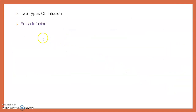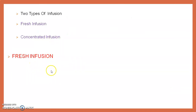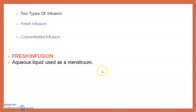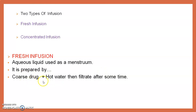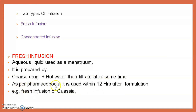There are two types of infusion: fresh infusion and concentrated infusion. For fresh infusion, aqueous liquid is used as a menstruum — that means water is used. It is prepared by taking coarse drug with hot water, keeping it for 15 minutes, and then filtering. As per pharmacopoeia, it is used within 12 hours after formulation. An example is fresh infusion of cassia.